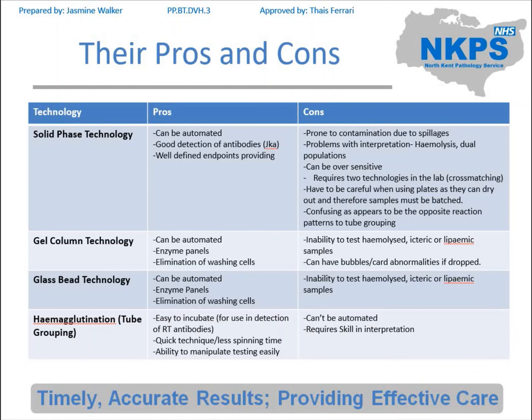I'm going to batch the gel column and glass bead technology together because their pros and cons are pretty similar. They can both be automated and manual, you don't have to wash any cells, and you can see things like dual population. However, you still can't test haemolysed samples and the cards can be dropped and damaged. Also, although they have foil over the top of them, if this is pulled back by mistake again you end up wasting cards, and because you have a card preset with specific tests you can end up wasting reagents — not as often as with solid phase because the cards have been designed specifically, but it does happen.